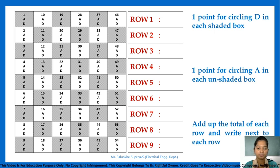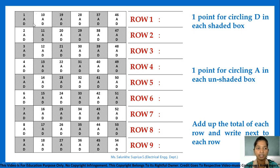Up to row 9, the statements are 9, 18, 27, 36, 45, and 54. After circling A or D, you calculate your score for each row. You get 1 point for circling D in each shaded box, and 1 point for circling A in an unshaded portion. Finally, you calculate the total score for each row.